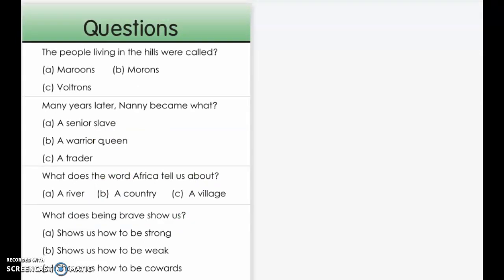The people living in the hills were called: A. Maroons B. Morons C. Voltrons. Many years later, Nanny became what? A. A senior slave B. A warrior queen C. A traitor.